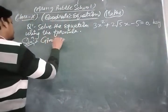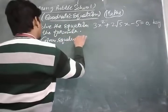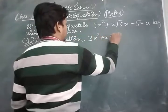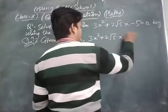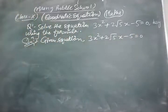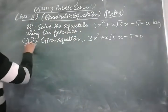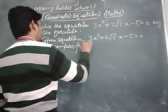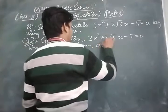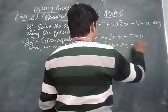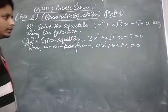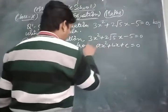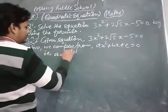First, we write the given equation: 3x² + 2√5·x - 5 = 0. Now we compare with the general form ax² + bx + c = 0. The coefficient of x² is a = 3.